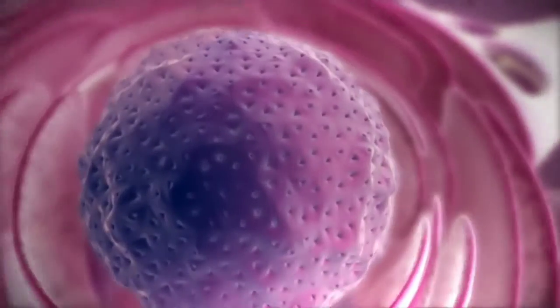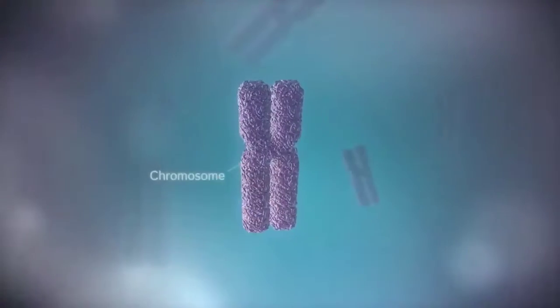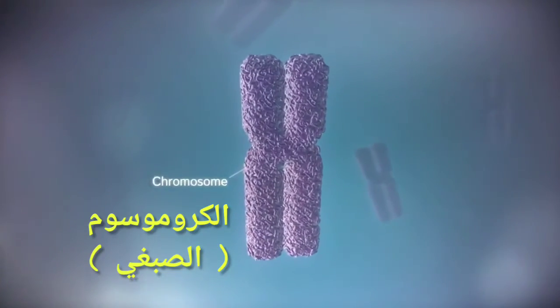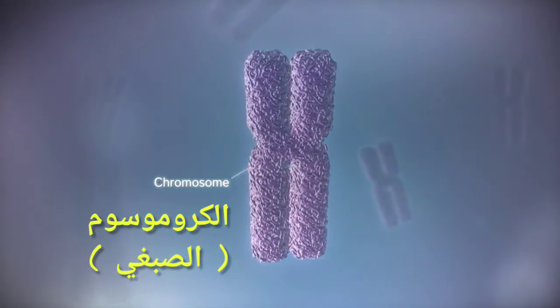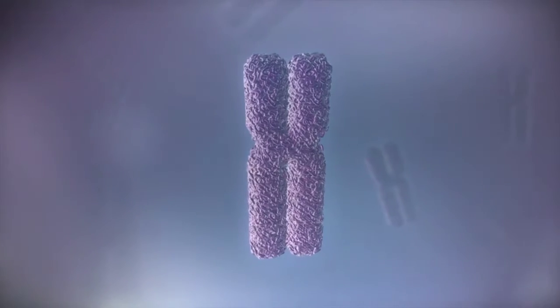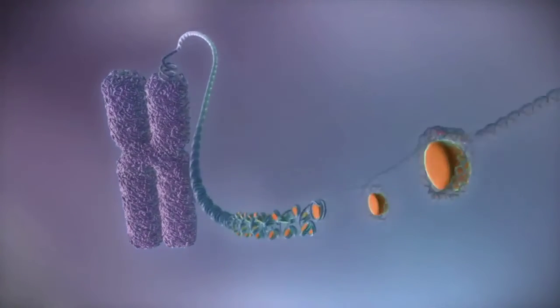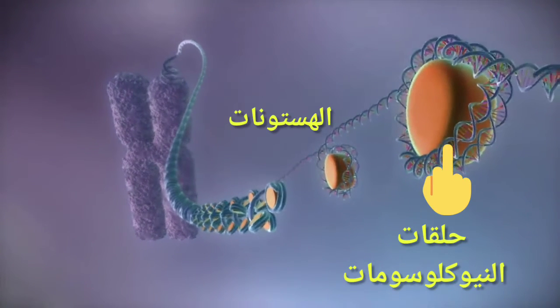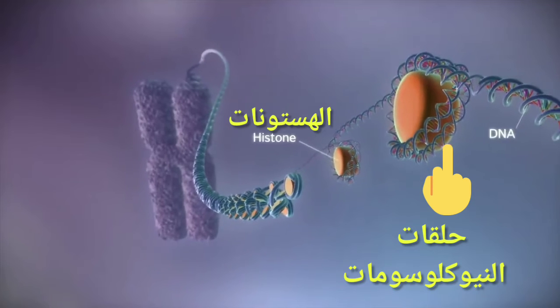In humans the genome is split between 23 pairs of chromosomes. Each chromosome contains a long strand of DNA, tightly packaged around proteins called histones.